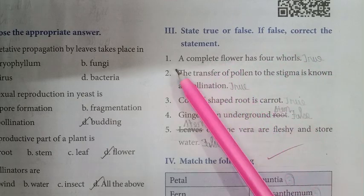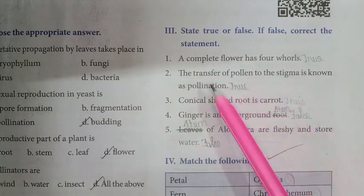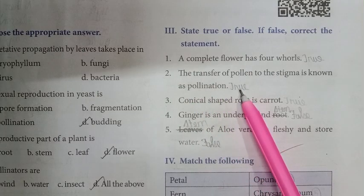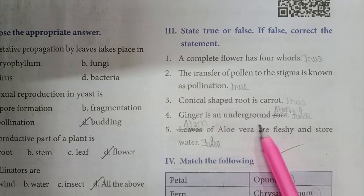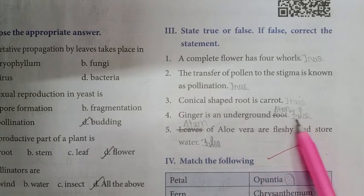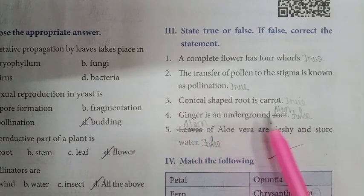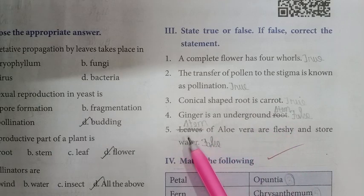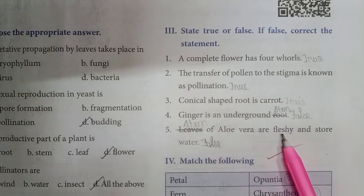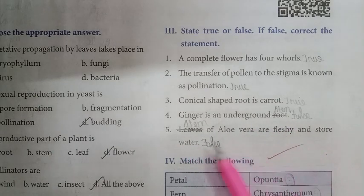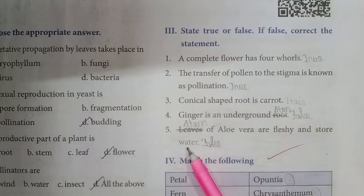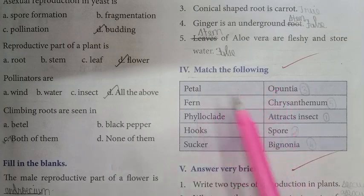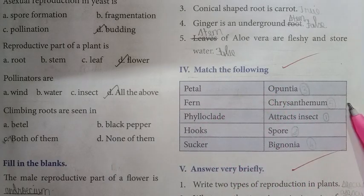State true or false; if false, correct the statement. First question — Answer: True. Second question — Answer: True. Third question — Answer: True. Fourth question: Ginger is an underground root — Answer: False. Ginger is an underground stem. Next: Leaves of aloe vera are fleshy and store water — Answer: False. Stem of aloe vera is fleshy and stores water.